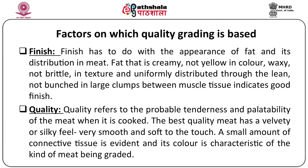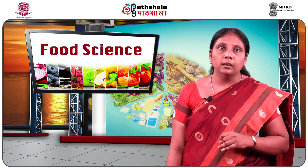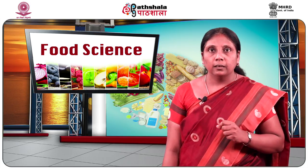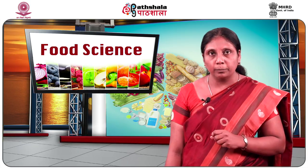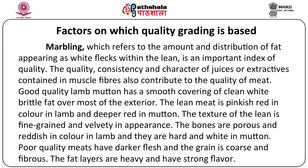The third aspect on which meat is graded is quality, referring to the tenderness and palatability of the meat when cooked. The best quality meat has a velvety or silky feel, is smooth and soft to touch, has a small amount of connective tissue evident, and its colour is characteristic of the kind of meat being graded. Apart from conformation and finish, meat is also graded on maturity of the animal and marbling. Maturity affects texture, firmness, and colour, while marbling — the amount and distribution of fat appearing as white flecks within the lean muscle mass — is an important indicator of quality. The quality and character of juices or extractives contained in the muscle fibres also contribute to the overall quality of meat.